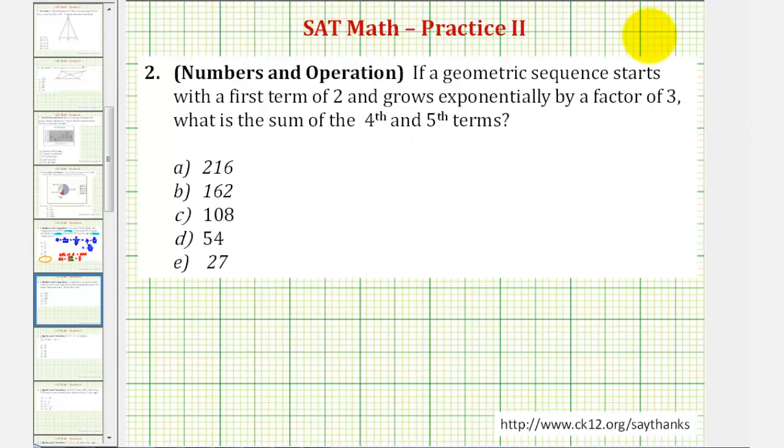Welcome to a practice SAT math question. If a geometric sequence starts with a first term of two and grows exponentially by a factor of three, what is the sum of the fourth and fifth terms?